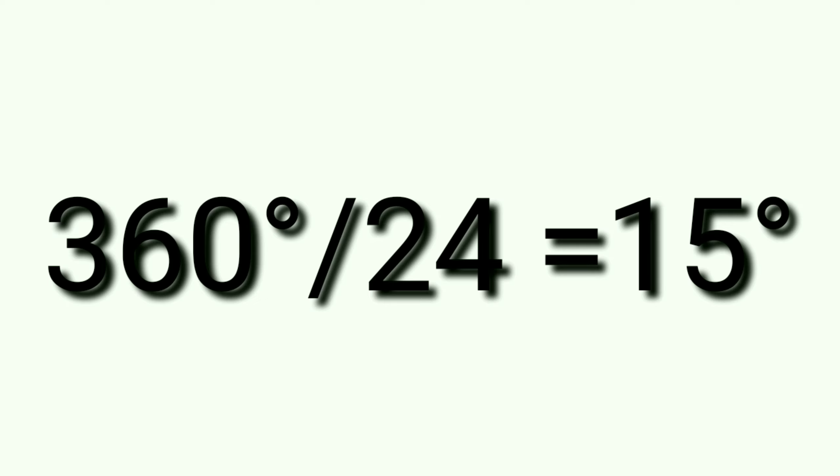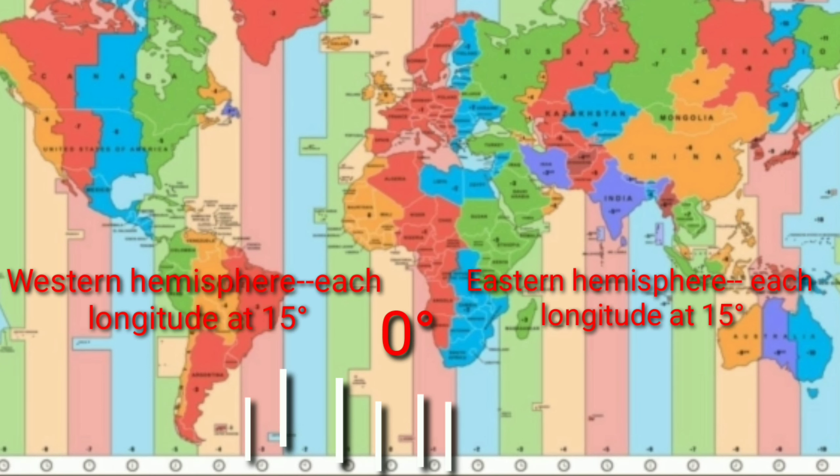The earth rotates 360 degrees in approximately 24 hours. If we divide 360 degrees by 24, we get 15 degrees. That means the earth rotates 15 degrees in 1 hour. The earth has been divided into 24 time zones.